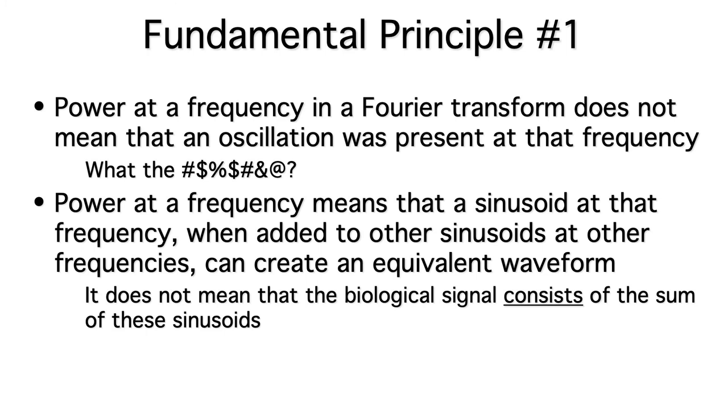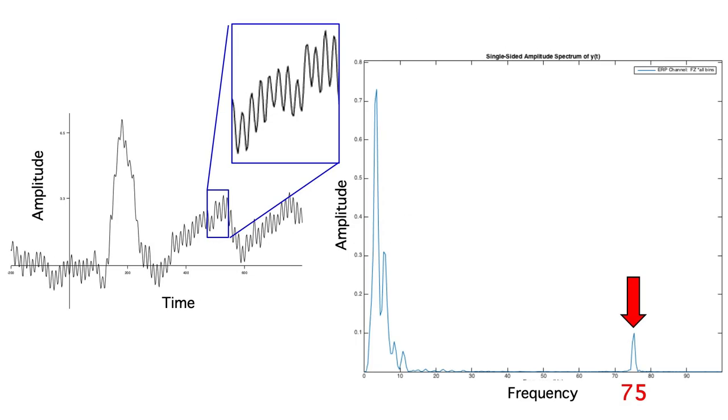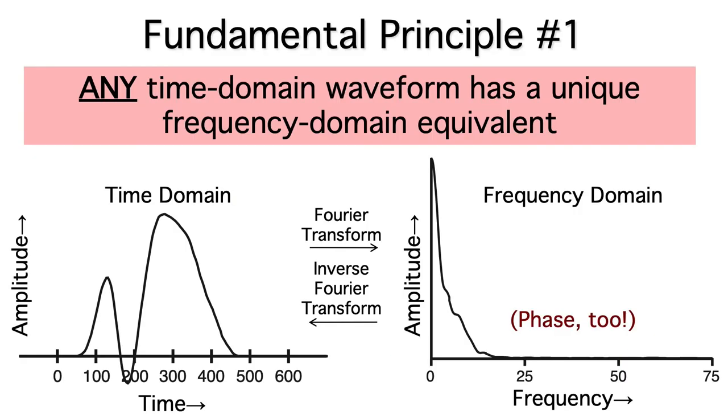So, power at a given frequency in a Fourier transform does not mean that an oscillation was actually present at that frequency. There might be an oscillation at one of the frequencies in the Fourier transform, like the 75 Hz oscillation that we see here. But you can't tell that just from looking at the frequency domain waveform. Whether the brain is oscillating or not, you'll always get activity at some frequencies in a Fourier transform. So, when you read a paper that applies the Fourier transform or some related method, be careful about any conclusions they draw about oscillations.